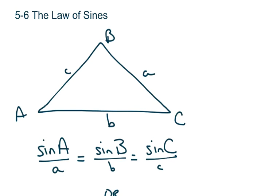In section 5-6, we're going to introduce something called the law of sines. We've spent a lot of time talking about right triangles and finding missing sides and angles. It's really easy when you use just a general trig identity. But if you don't have a right triangle, you cannot use sine, cosine, and tangent to find the missing sides and angles, so we need another way. The law of sines works for non-right triangles, although it does work for right triangles too.